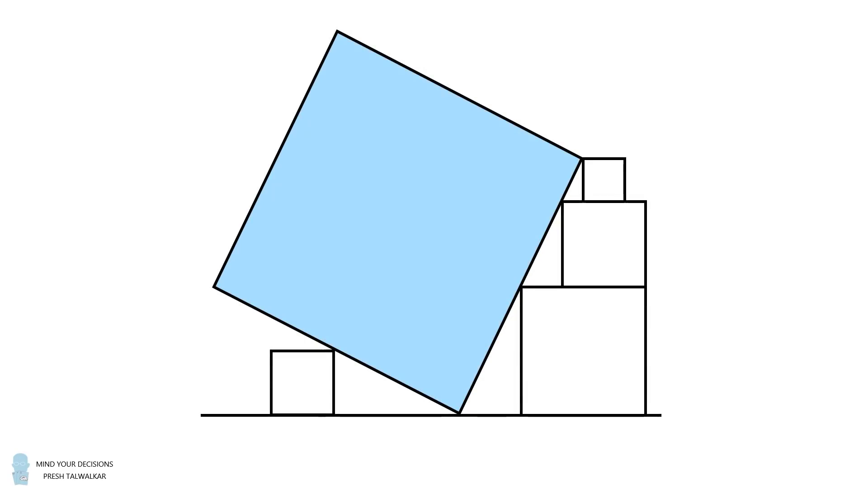Hey, this is Presh Talwalkar. A square is tilted between the ground and two sets of objects.